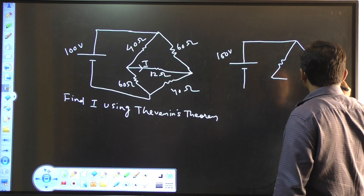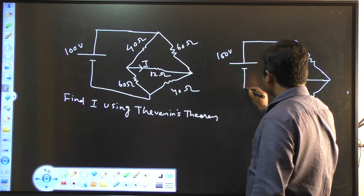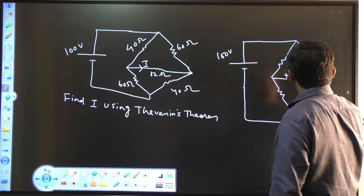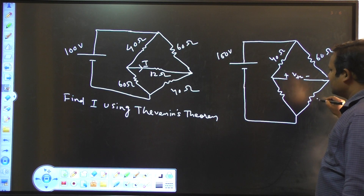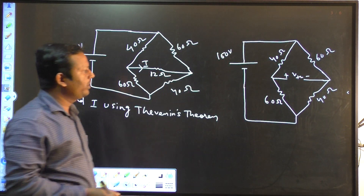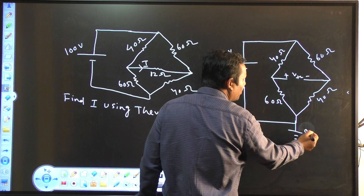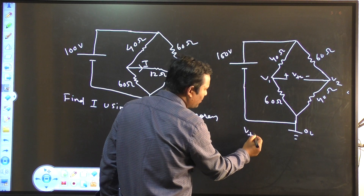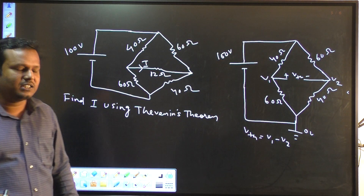Open-circuiting this 12 ohm resistor. Now to find this Vth across this 12 ohm resistor. This is 40 ohm, this is 60 ohm, this is 40 ohm, this is 60 ohm. You have to find this open-circuit voltage Vth. I have to take this point as ground — this is 0 volt. Let this point be V1 potential, this is your V2 potential. Then your Vth will be V1 minus V2.